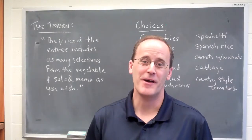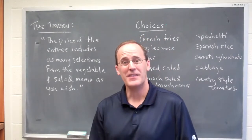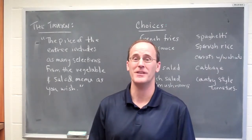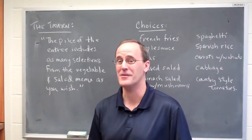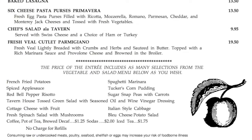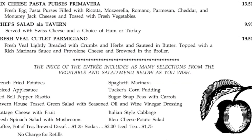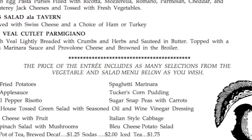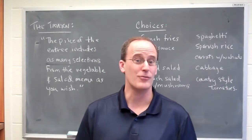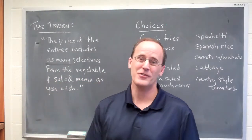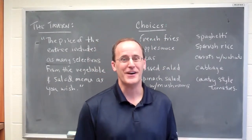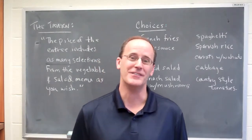So I'm back in the office and we're now going to talk about what you just saw. In that video you saw me and three other economists making choices about which sides to order to accompany their meal inside the tavern. Here's what it says on the tavern's menu: the price of the entree includes as many selections from the vegetable and salad menu as you wish. A lot of places will say your choice of a side or two, but not as many — which of course invites an interesting test that maybe only an economist would be interested in.